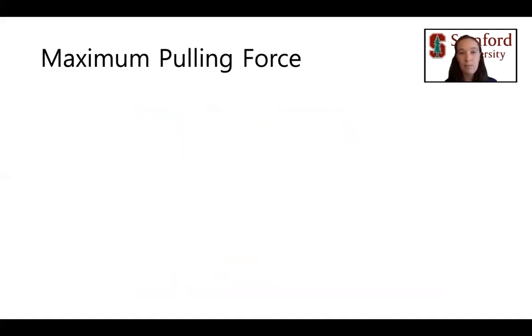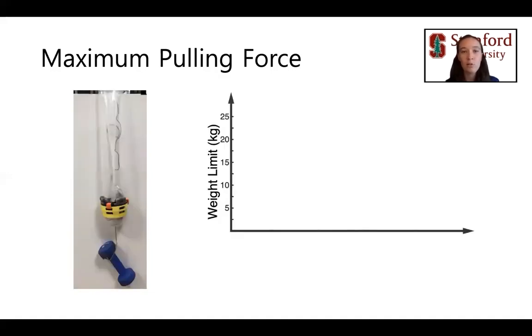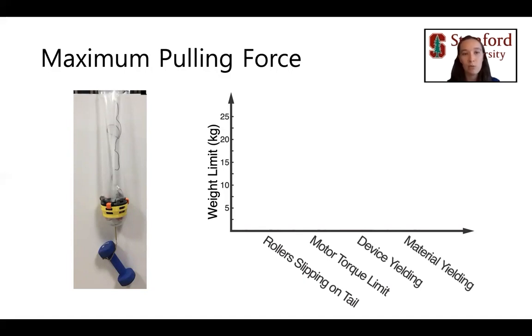The second experiment measured the pulling force capability of the soft growing robot with our tip mount. We pointed the robot tip downwards and hung weights from the tip mount. The heaviest weight that the robot was able to lift was 2.5 kg. To understand the robot's weight lifting limit, we measured or calculated the weight limits due to four factors: the rollers slipping on the tail, the torque limit of the device motors, the device material yielding, and the robot body material yielding. The factor that currently limits the robot's weight bearing capacity to 2.5 kg is the rollers slipping on the tail.